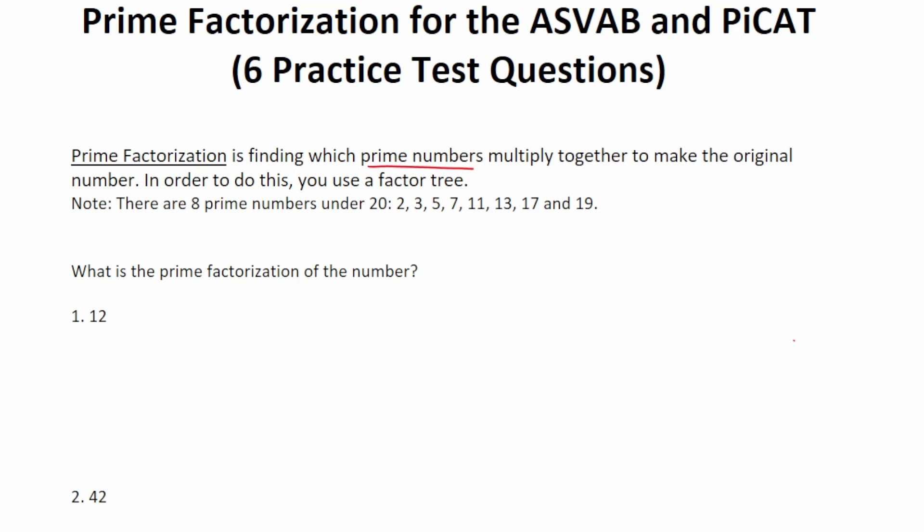I also want to point out that there are eight prime numbers under 20, notably 2, 3, 5, 7, 11, 13, 17, and 19. So in order to do prime factorization, we're going to use the prime numbers under 20, as well as a factor tree. And as you'll see in a minute, that's really all there is to it.